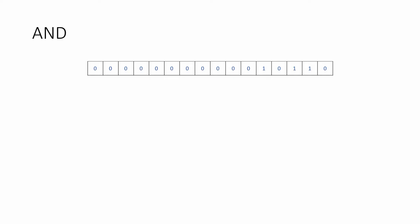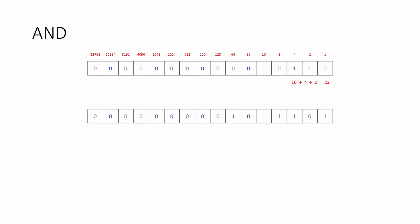Normally, integers require 32 bits — that's 4 bytes — but for the purpose of this discussion, we'll stick with 16-bit integers. Looking at the place values, you can see that this is the number 22 in denary. Here's another 16-bit unsigned integer. This is 93 in denary.